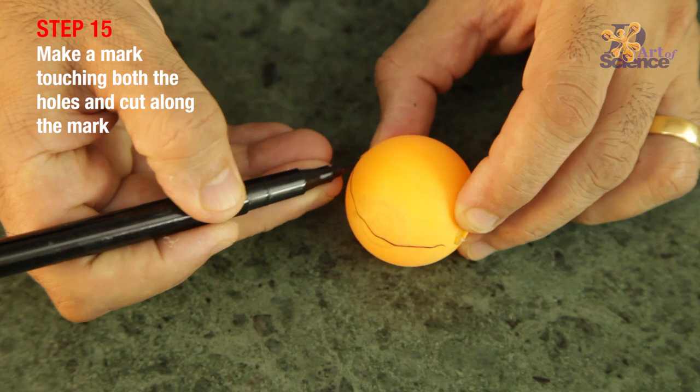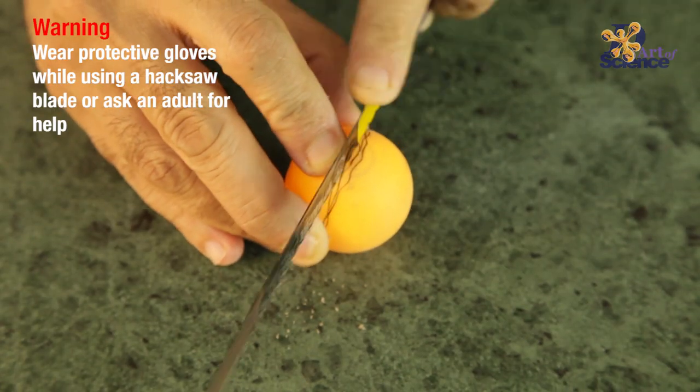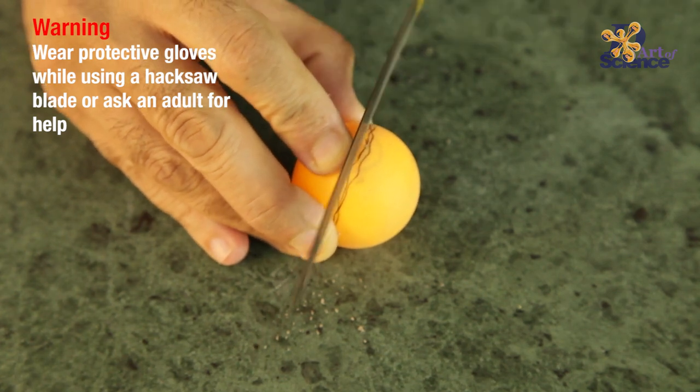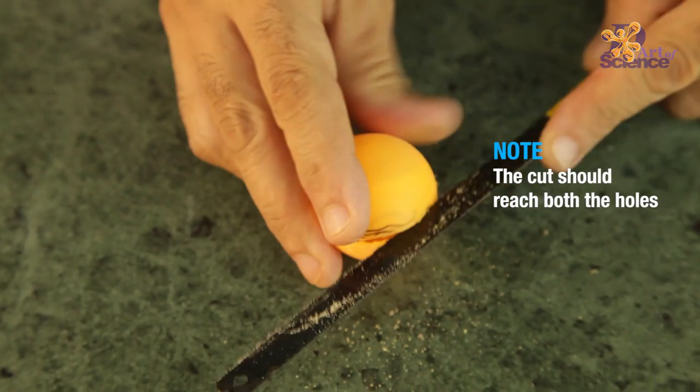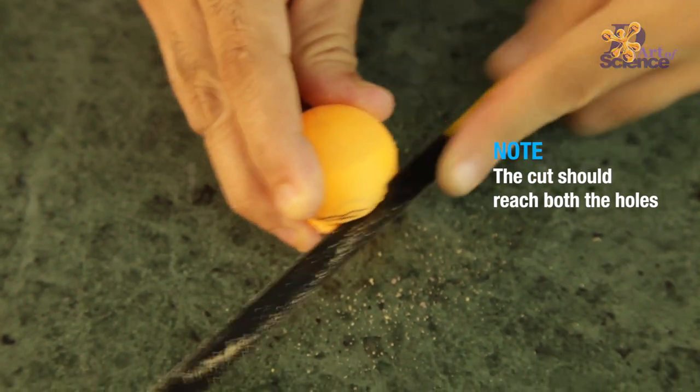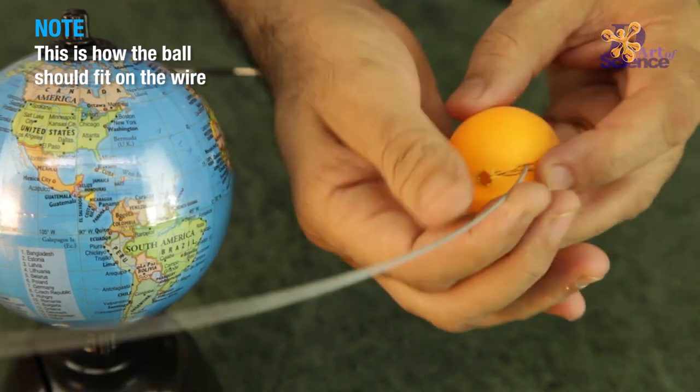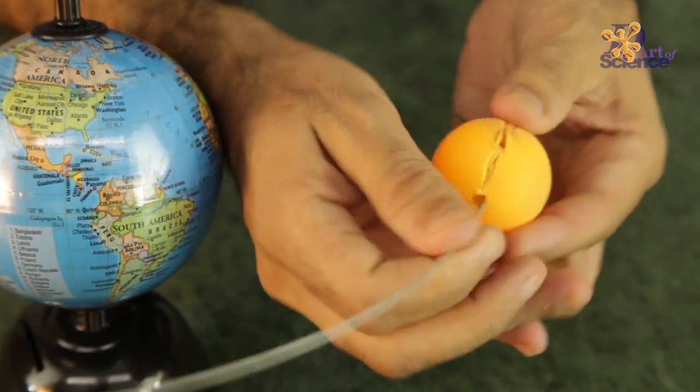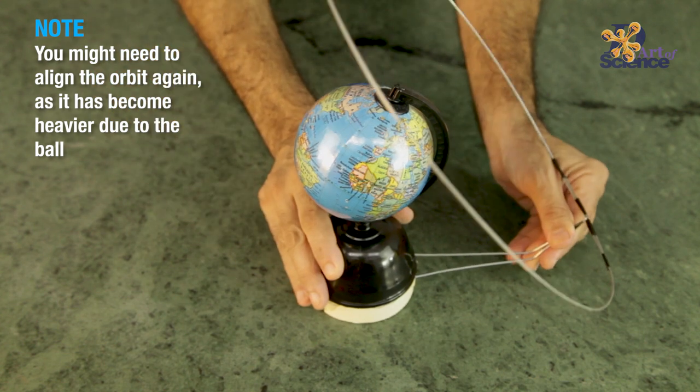Now you need to make a cut on the moon to put it on the wire. Use a hacksaw and once again either wear leather gloves or ask an adult to help because this part is tough. Make sure that the cut reaches both the holes. This is how the ball will fit on the orbit wire. You might need to align the orbit once again because now it's become a bit heavier.